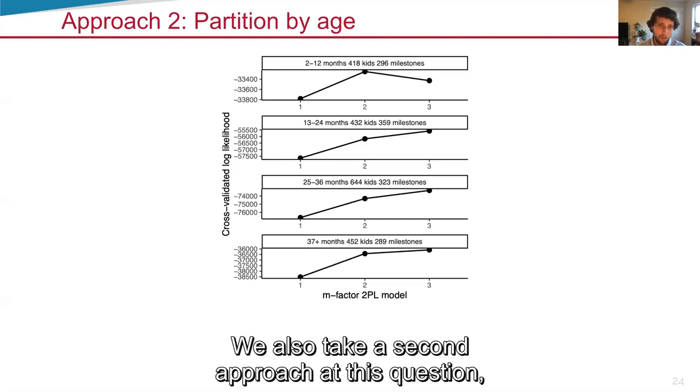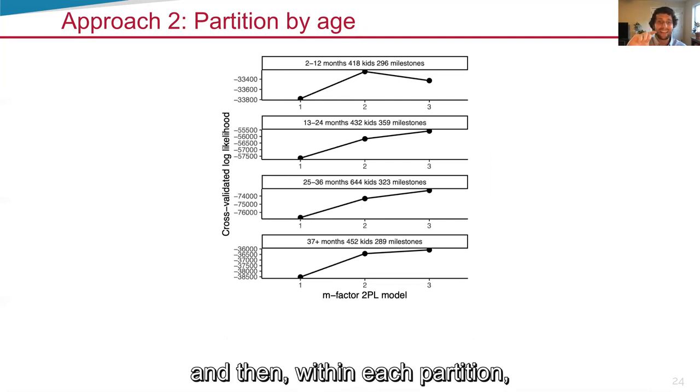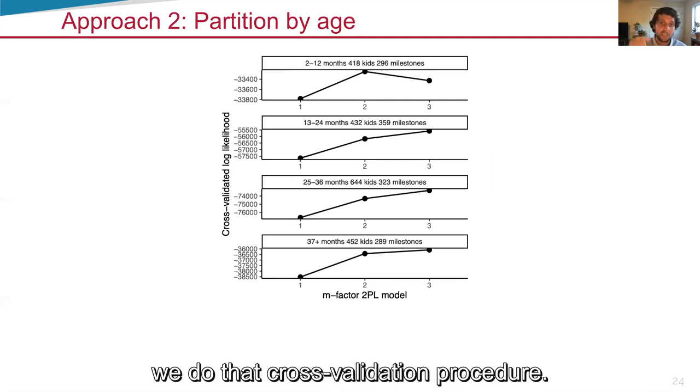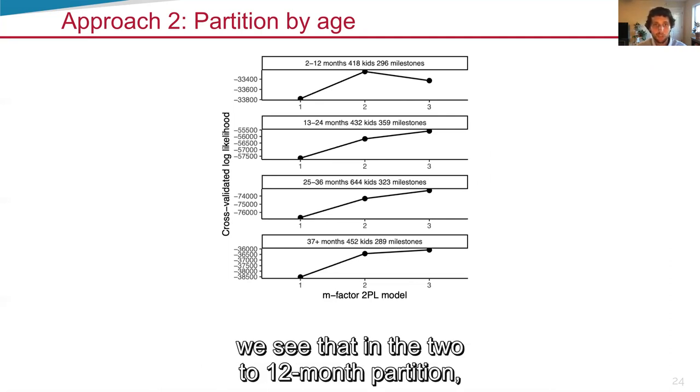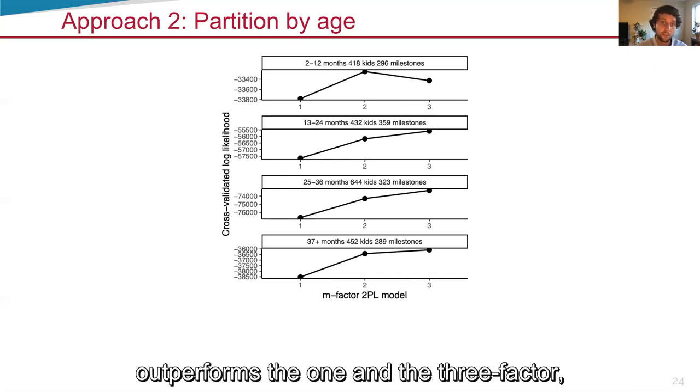We also take a second approach at this question, where we partition the data based on age. And then within each partition, we do that cross-validation procedure. When we do that, we see that in the two to 12-month partition, a two-factor model actually performs best, outperforms the one and the three-factor.